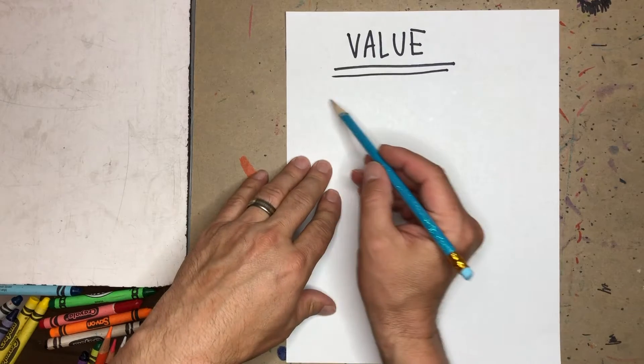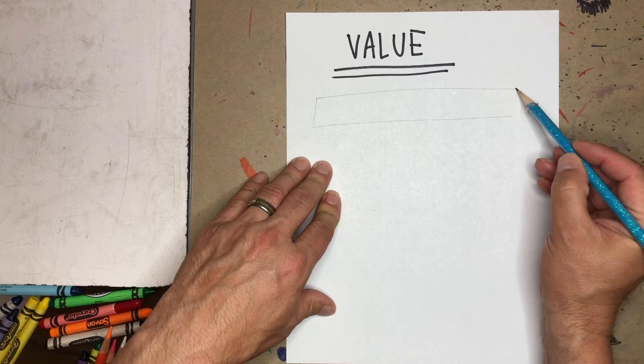Okay, we're talking about value, which isn't how much something's worth in art, it's how light or dark a color is.